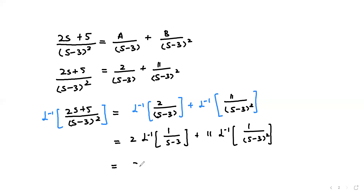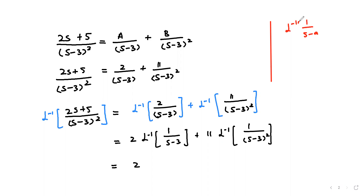You know the formula: Inverse Laplace of 1 over (s minus a) equals e raised to power at. Here we have s minus 3, so a = 3, and this gives us e raised to power 3t. For the second term, we have (s minus 3) whole square, so we use the first translation theorem.